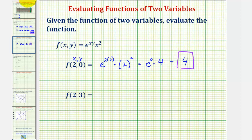For f(2, 3), we would substitute 2 for x and 3 for y. So for e to the power of x times y, we would have e to the power of 2 times 3, times x squared, which would be times 2 squared.